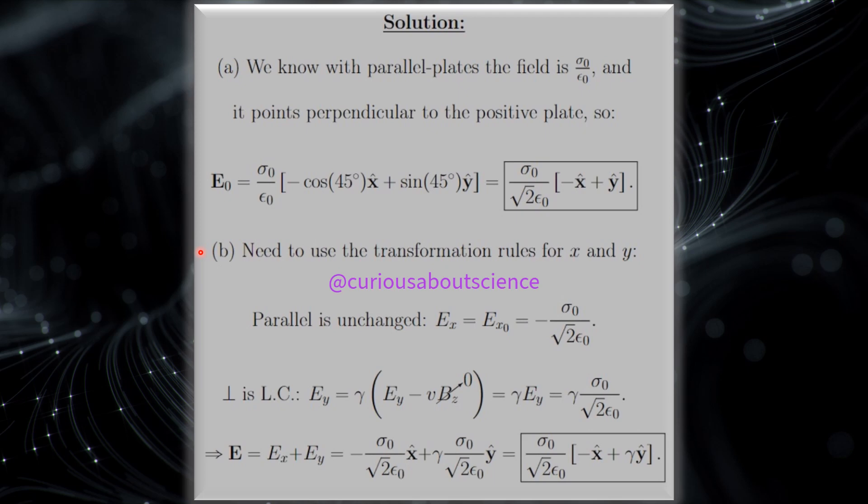Part B, though, we need to use the transformation rules for x and y. Parallel is unchanged, so E_x is equal to E₀_x, which is just equal to negative σ₀ over root 2 ε₀. Perpendicular is Lorentz contracted, so we have E_y is equal to gamma times E_y minus vB_z. Well, we know B_z equals zero here, so that's equal to gamma E_y, which is equal to gamma σ₀ over root 2 ε₀.